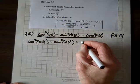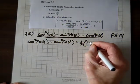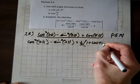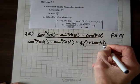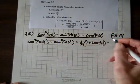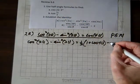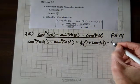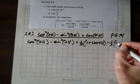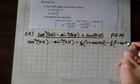That's going to be one half times the quantity 1 plus cosine of 4u, minus — and now we'll expand sine squared of 2u using the identity on page 514 — and we get one half times the quantity 1 minus cosine of 4u.